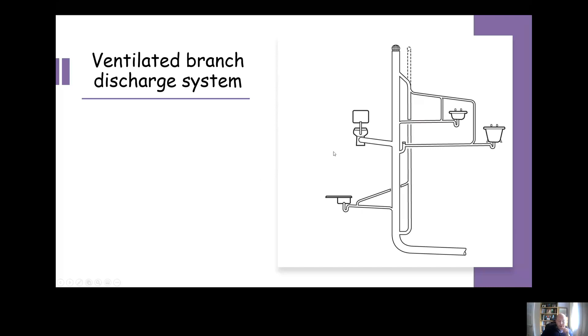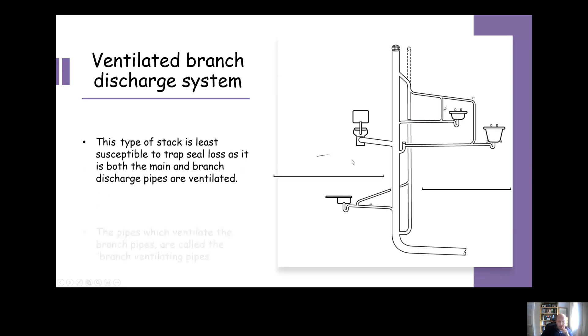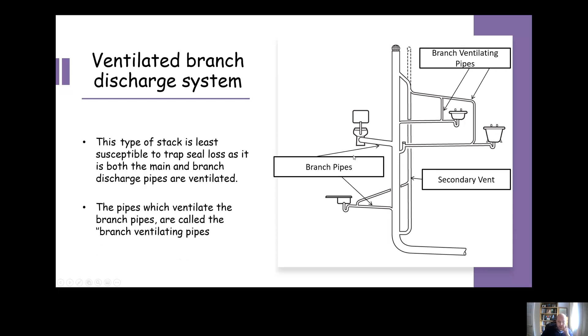Ventilated branch discharge systems. You can see an example of one here. Again, the terminology is pretty similar. You've got your branch pipes coming off the main stack, you've got your secondary vent running up alongside, and your main discharge stack, your vent, et cetera, but you also have branch ventilating pipes which vent the discharge pipes, the branch discharge pipes.